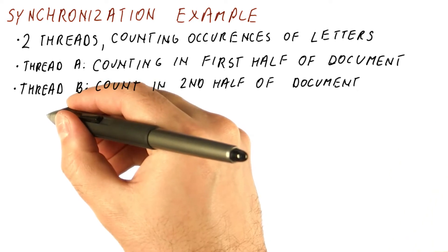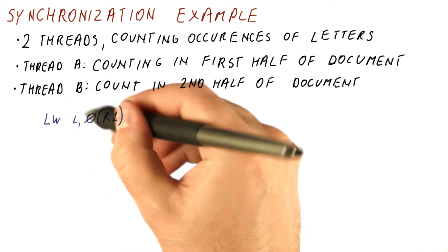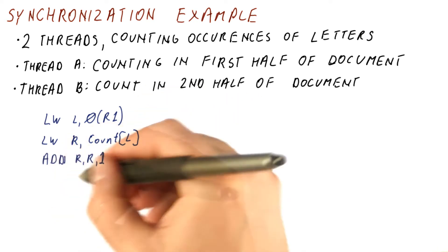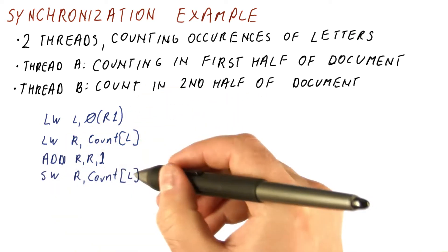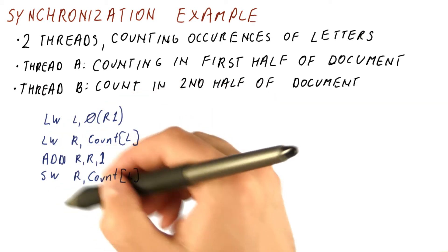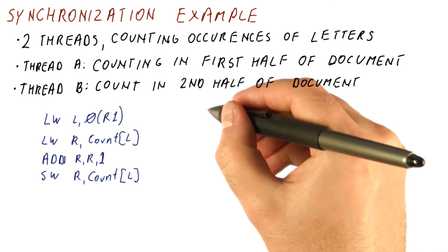So the code might look like this. A thread will load a letter, load from memory the count for that letter, add one to that count, and then store the new count back into memory. While thread A is doing this, thread B might be doing this.